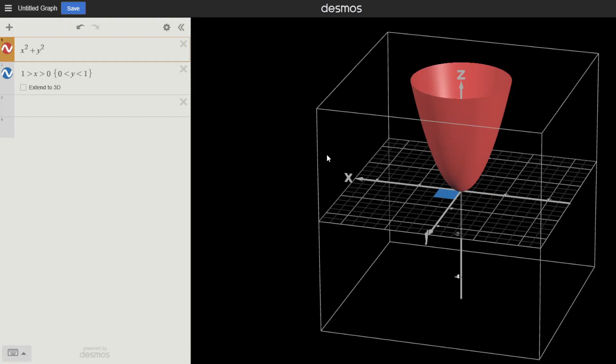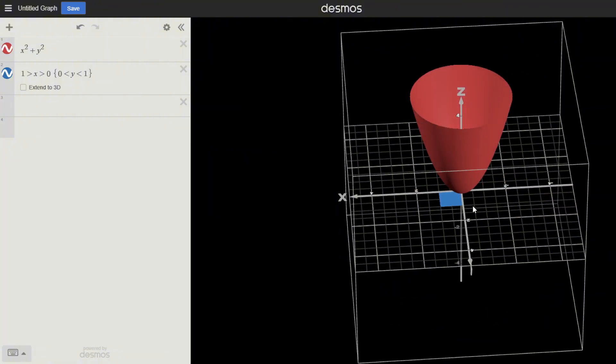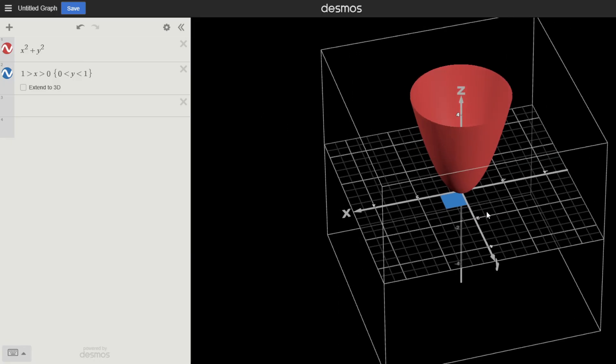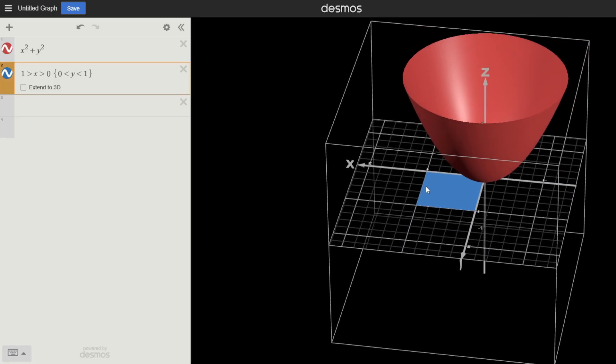So what do I mean by integrating upon an area? Now that we're in Desmos 3D, you can actually see this. This is our function, a paraboloid x² + y², and we're going to integrate upon this area here.